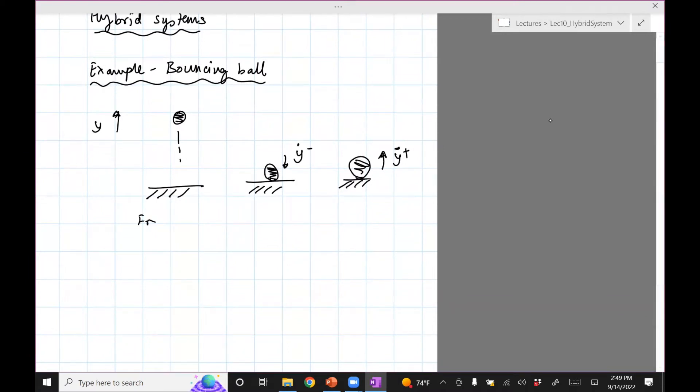So what we have here is free fall, and then we have a bounce. Fall, bounce, fall, bounce. So it just keeps happening.